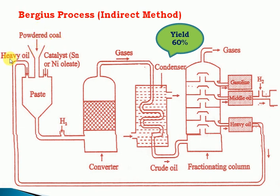Heavy oil and a catalyst are added. The catalyst used is tin or nickel. These are mixed to form a paste, which is then pumped. Hydrogen gas is added — the addition of hydrogen is the main step, as it increases the hydrogen ratio in the coal.